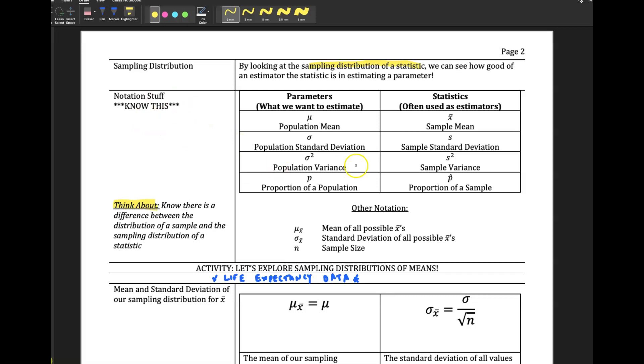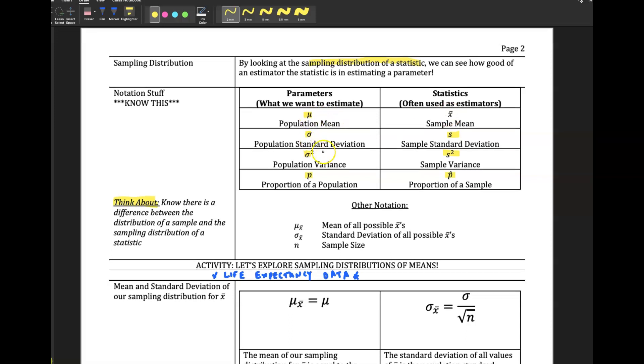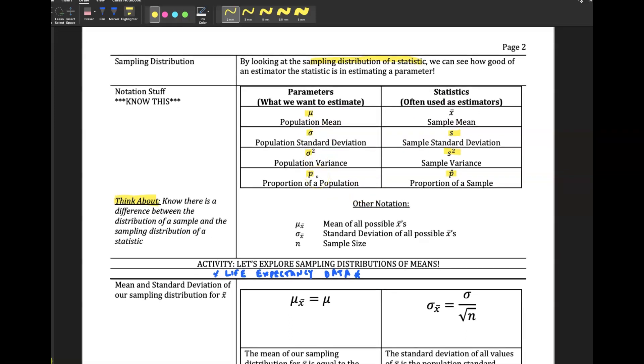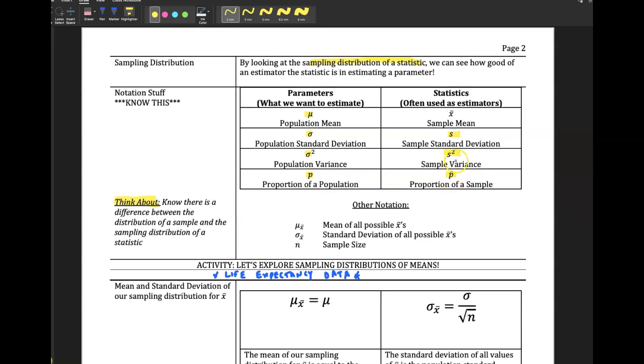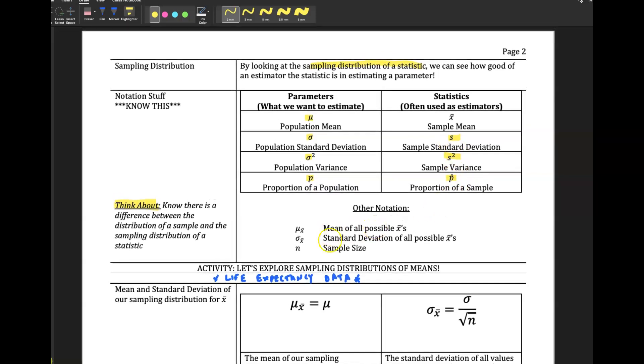And so you have all of this notation that you'll go through. Make sure, again, don't be intimidated by this notation. We've seen it before. X bar, mu, sigma, sigma squared, P for population proportion, P hat, S, right? And so we have all this notation.